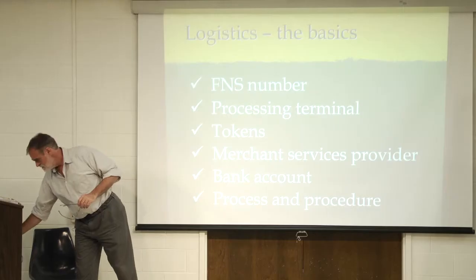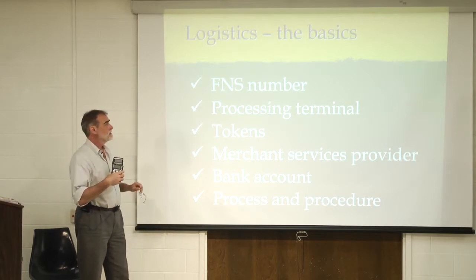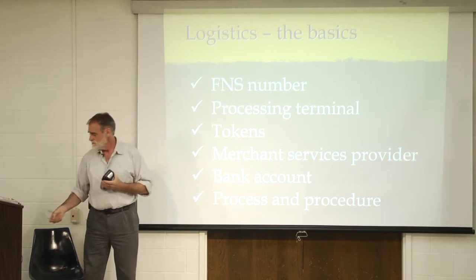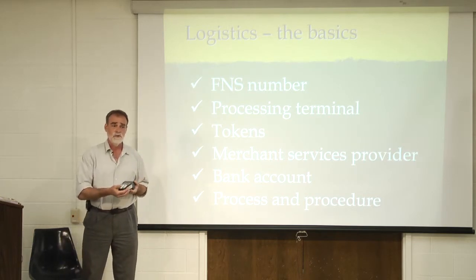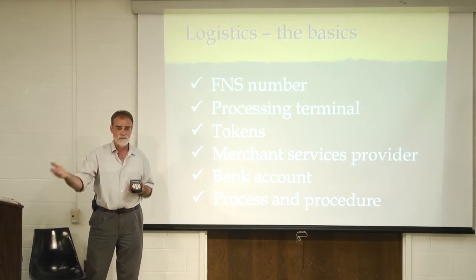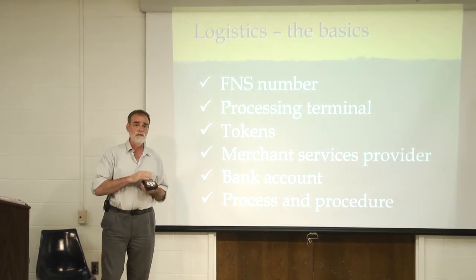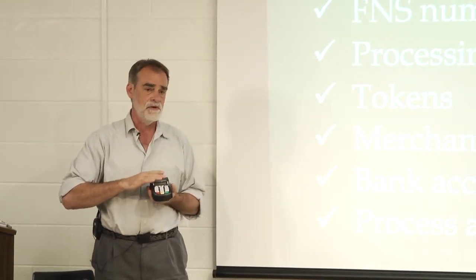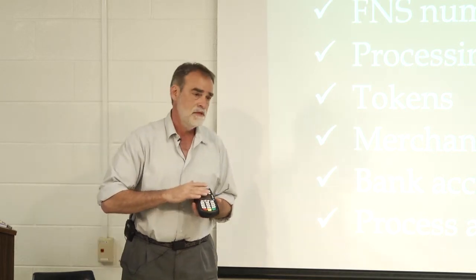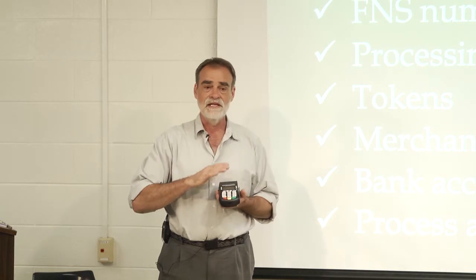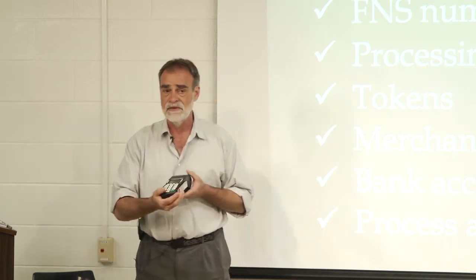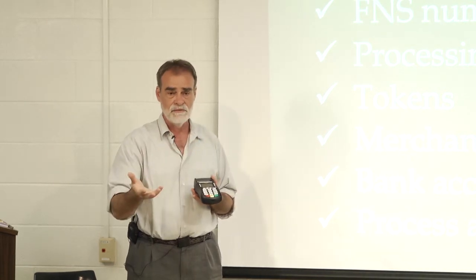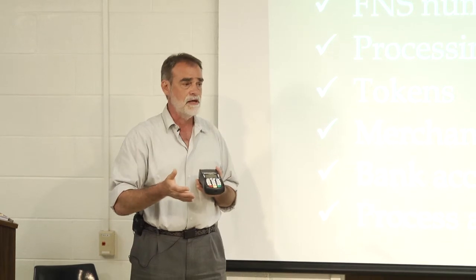You need a processing terminal, something that looks like this. The FNS number is free. It's just time, it's not money. A processing terminal, there are various options now. You can purchase one. This costs about $800. You can rent one, which means you have a lower cost spread out over time. There are also programs, and ASAP can help you with the contact information for how these are being distributed through various funding sources, including the Community Transformation Project, to get these at a lower cost or free. There have been programs in the past where you can get one of these free.